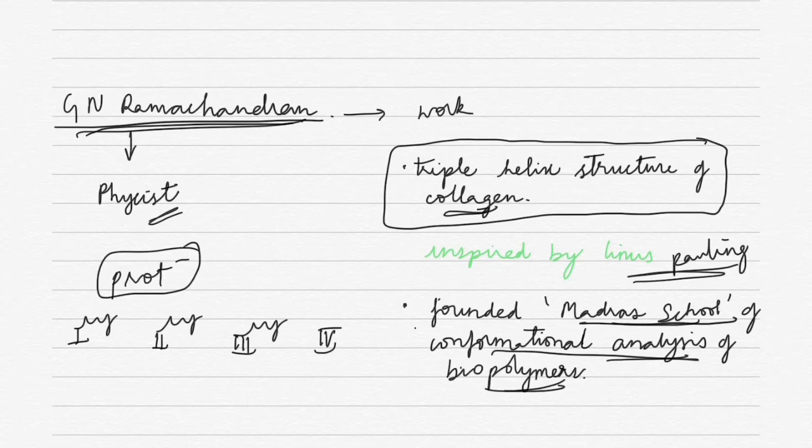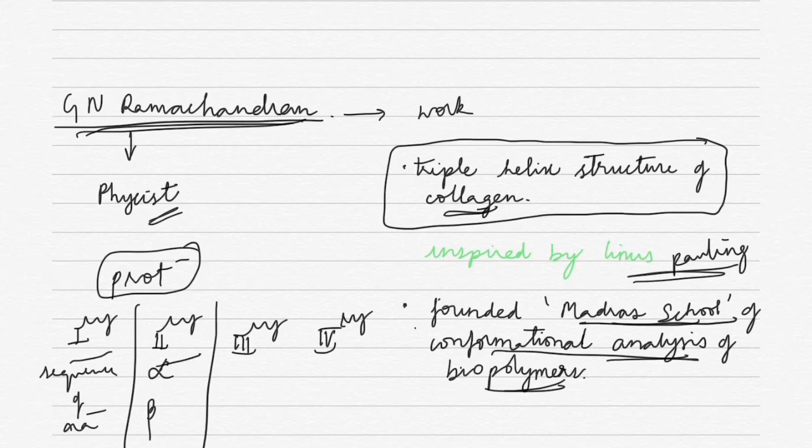When we say primary structure, it is the sequence of amino acids. And when we say secondary structure, we have alpha and beta in secondary structure. So like this we study for primary, secondary, tertiary and quaternary.